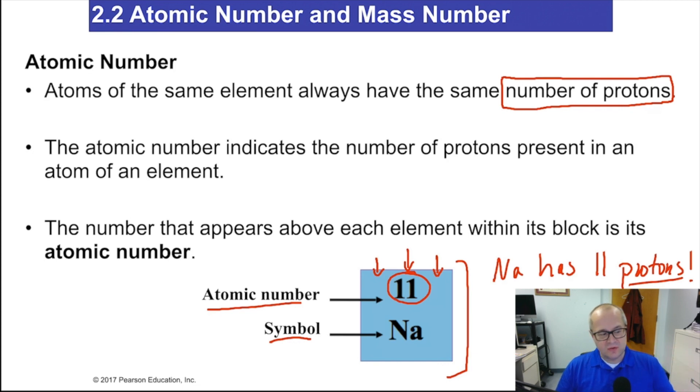If I happened to give sodium another proton, somehow it magically got another proton, it would no longer be sodium. It would be magnesium, atomic number 12. So the number of protons is equal to the atomic number, which tells me what atom I'm dealing with.